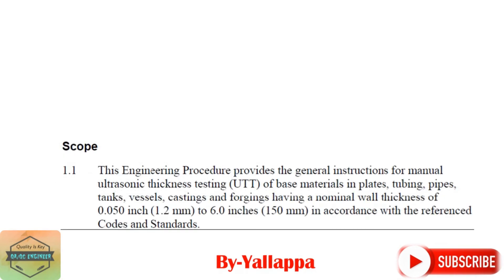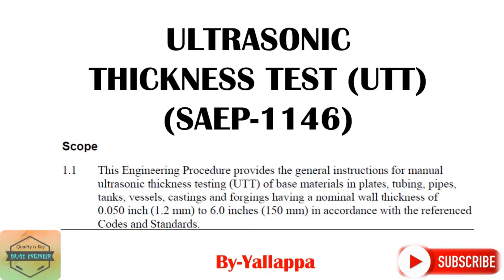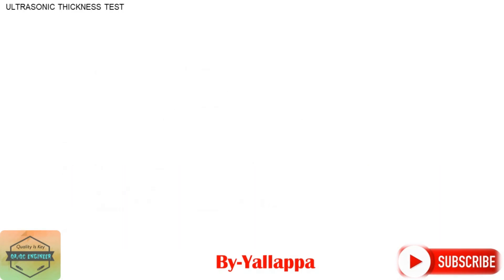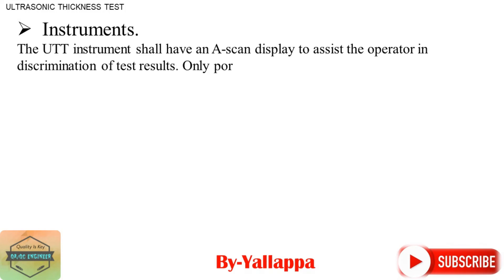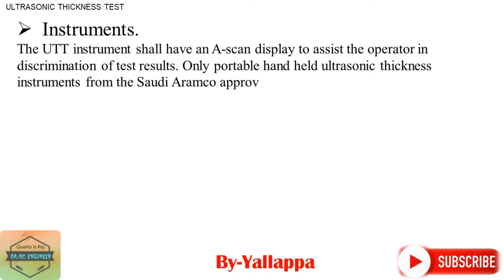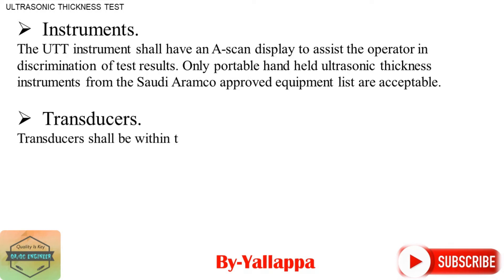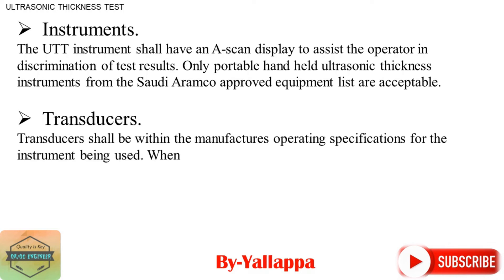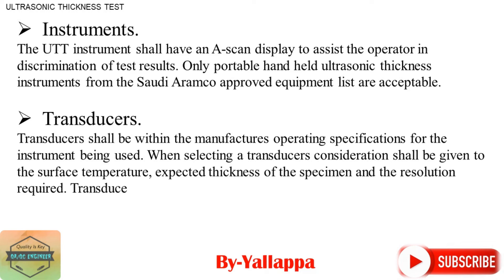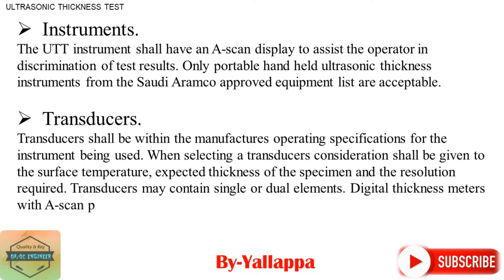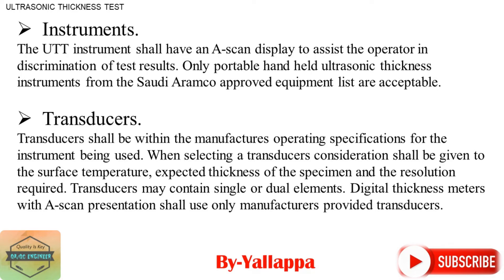Ultrasonic Thickness Test (UTT) — SAEP 1146. The UTT instrument shall have an A-scan display to assist the operator in discrimination of test results. Only portable hand-held ultrasonic thickness instruments from the Saudi Aramco approved equipment list are acceptable. Transducers shall be within the manufacturer's operating specifications for the instrument being used. When selecting a transducer, consideration shall be given to surface temperature, expected thickness of the specimen, and the resolution required. Transducers may contain single or dual elements.